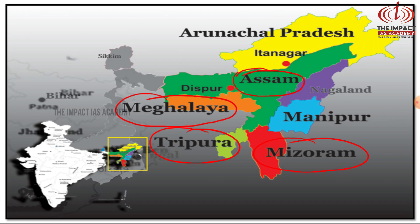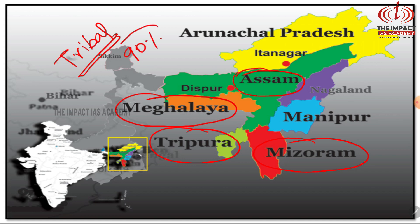Especially those areas which have a high tribal population — almost 90% of the population in the area are tribal people — can be included under the Sixth Schedule. The particular districts within these four states, such as the Bodoland and Gorkha areas, fall under the Sixth Schedule administration.